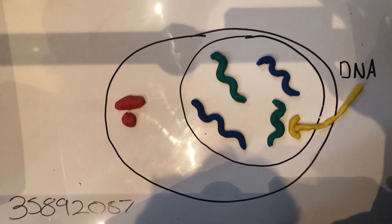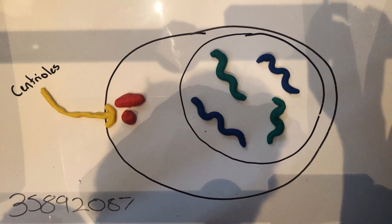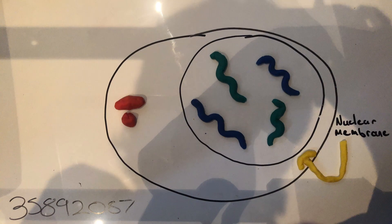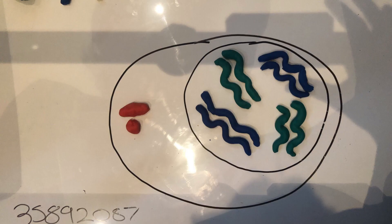Process of meiosis. Interphase occurs in the synthesis phase of the cell cycle. Within interphase, the DNA is replicated, creating two copies of each chromosome within the cell called sister chromatids.